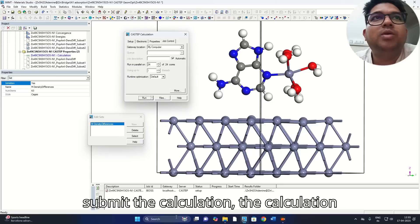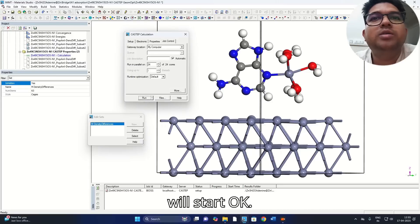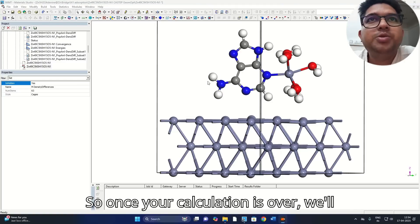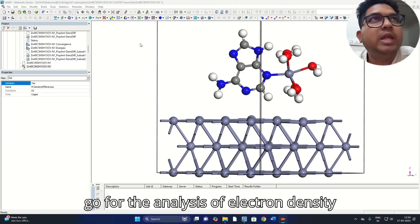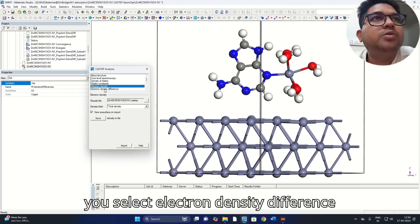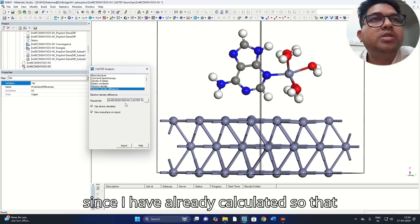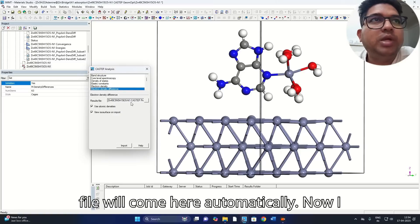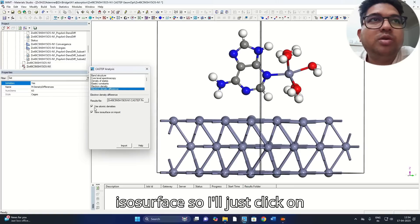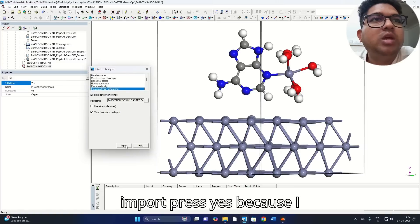So once you have submitted the calculation, the calculation will start. Once your calculation is over, we'll go for the analysis of electron density difference. So go to the analysis here, you select electron density difference. Since I have already calculated, so that file will come here automatically. Now I just want to see the iso surface.